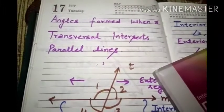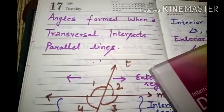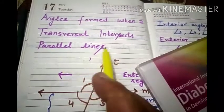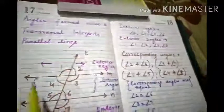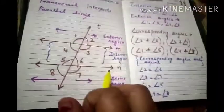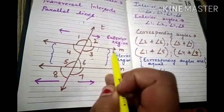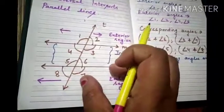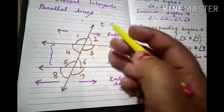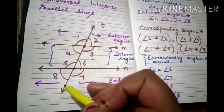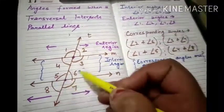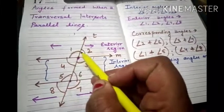Now we discuss the next topic, which is related to this and is a very important topic: angles formed when a transversal intersects parallel lines — what angles are formed. As you see, here I have drawn line M and line N, both parallel lines because the gap between them is equal and they do not meet. T is a transversal line intersecting line M at one point and line N at another point. When a transversal intersects parallel lines, a total of 8 angles are formed: angles 1, 2, 3, 4, 5, 6, 7, and 8.